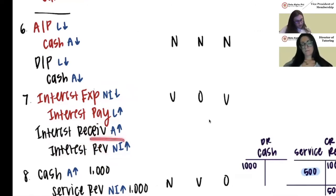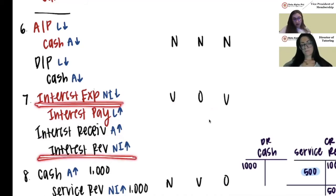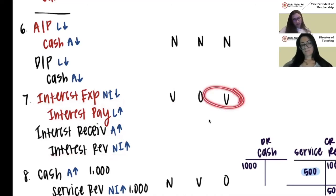Interest receivable affects assets: assets were never increased when they should have been, so assets are understated. Liabilities were increased when they should not have been, so liabilities are overstated. Net income was lowered when it should have been increased, so net income is understated.